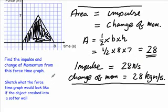Now, a good second part of this question is this one here. It says, sketch what the force time graph would look like if the object crashed into a softer wall. Well, as it crashes into a softer wall, it's going to take a longer time to come to a halt. But the main thing to remember here is that the change of momentum is always going to be the same.